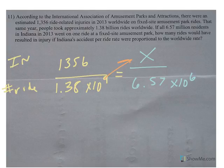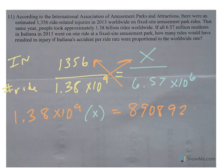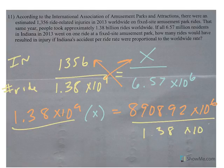When I cross multiply, I end up with, I'm going to go this way first, 1.38 times 10 to the 9th times x equals, when I multiply 1,356 by 6.57, I get 8,908.92 times 10 to the 6th. I'm going to divide by the number in front of x, which is 1.38 times 10 to the 9th.